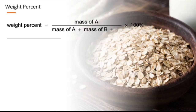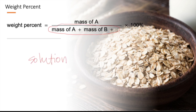For weight percent, we have mass of component A divided by (mass of A plus mass of B), which represents the total solution mass. The multiplier is 100. The numerator refers to a specific component — it could be the solute or the solvent.